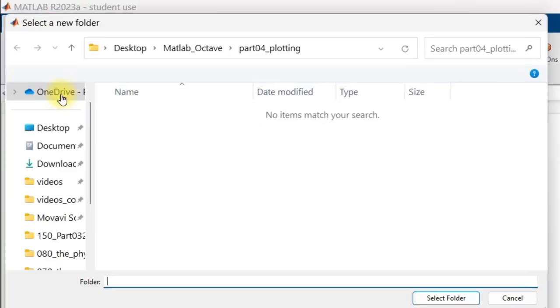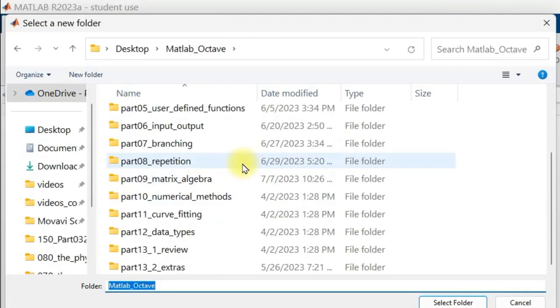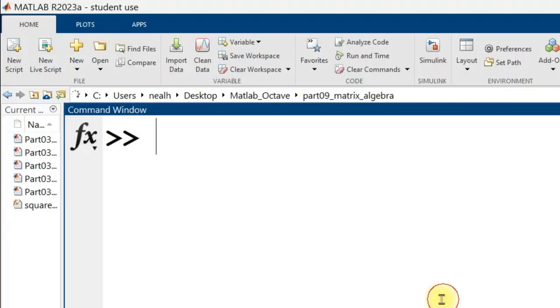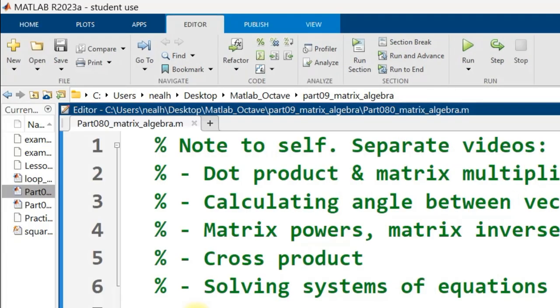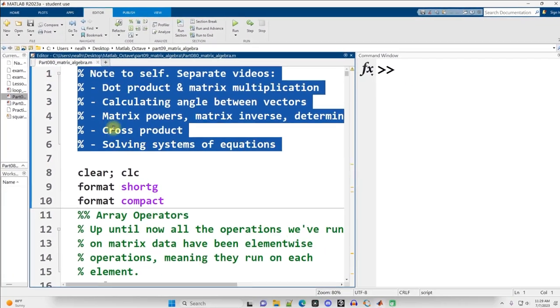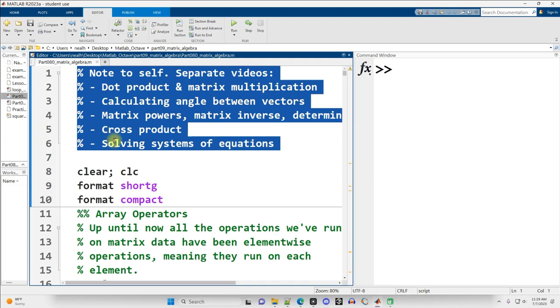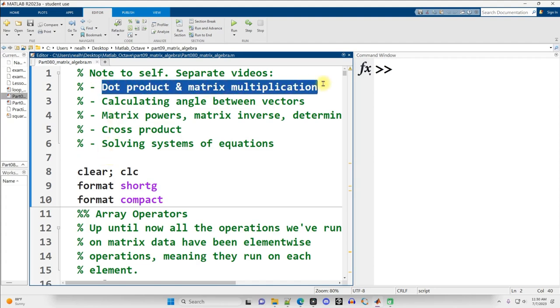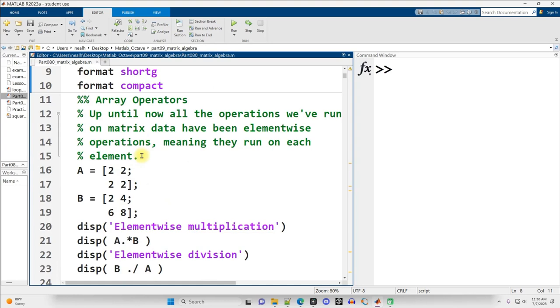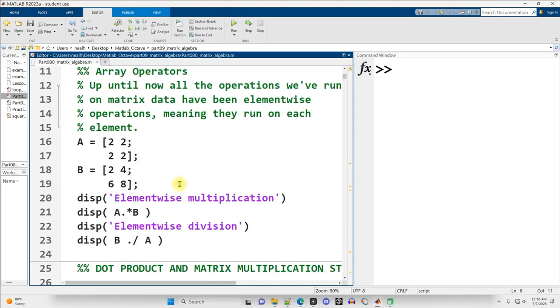Alright, in this video I'm going to be moving to the folder Part 09 Matrix Algebra, and in that folder I'm going to be opening up Part 080 Matrix Algebra right here. As always, there might be some notes at the top of each document. You can ignore those. I like to split these documents into multiple videos to try and keep the videos short. Links to all these documents are all in the video description. In this video, we're going to look at the dot product and matrix multiplication. So let's get right into the first section here with a little bit of review.